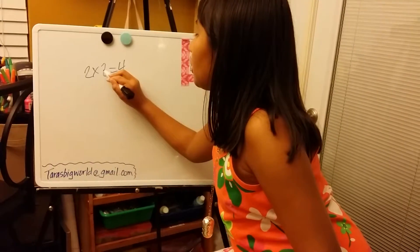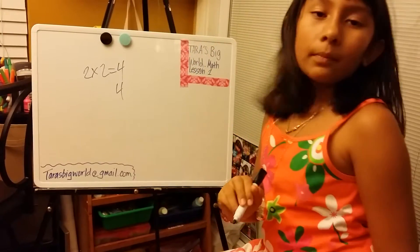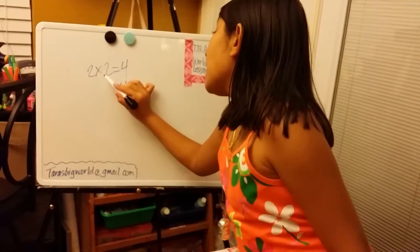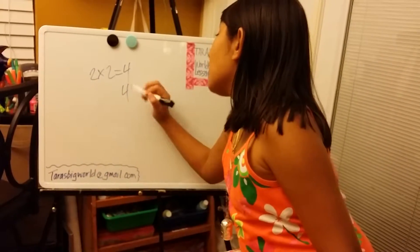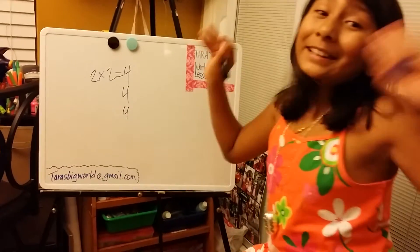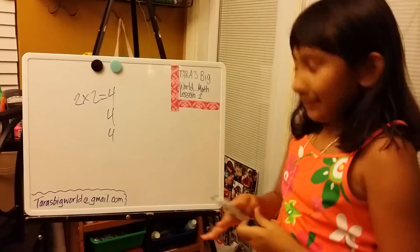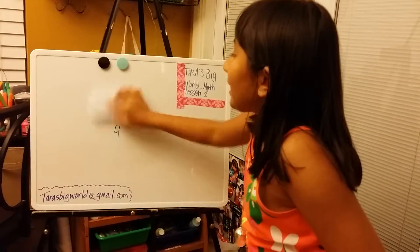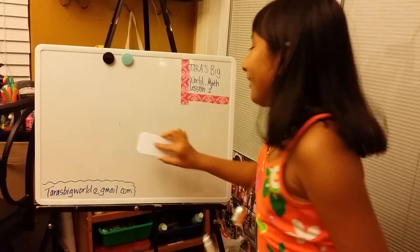Two times two equals four. Ding ding ding! Alright, now let's move on to the next number.